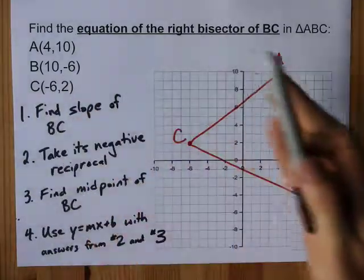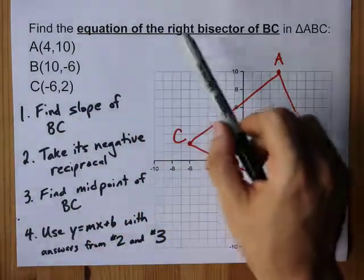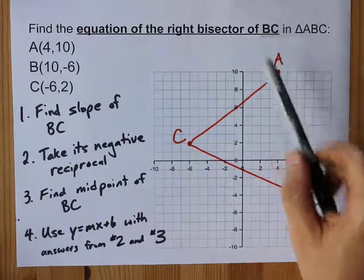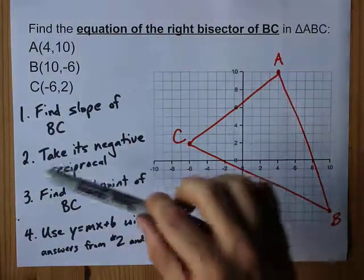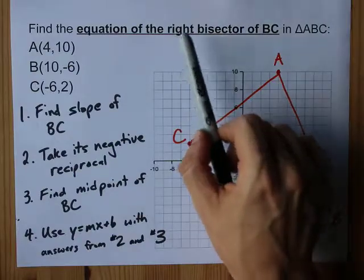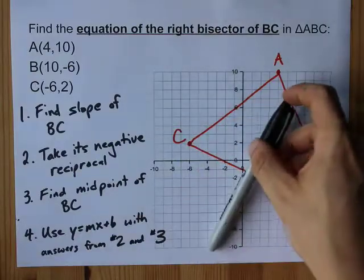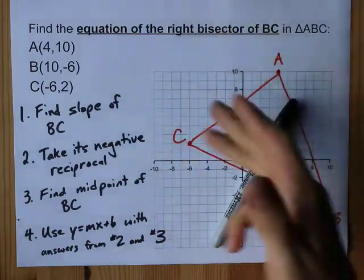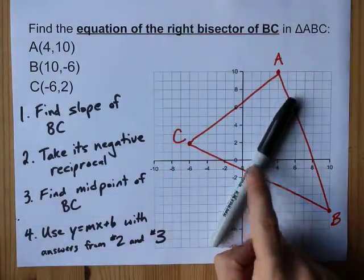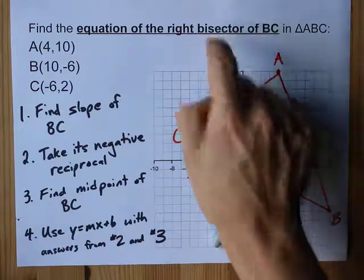Come with me on a journey to find the equation of the right bisector of BC in this triangle. To do that you're going to need to find the slope of a line that meets it at 90 degrees, that's the right part, and you're gonna need the midpoint of BC, that's the bisector part.